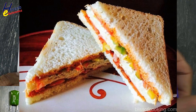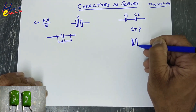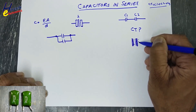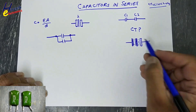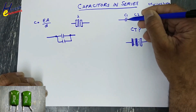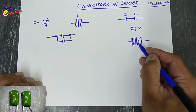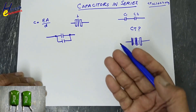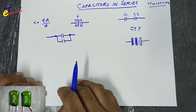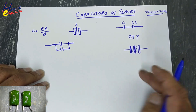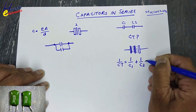In series, we are making a double-decker sandwich — one bread piece, some filling, then another bread piece, then filling, then a third bread piece. We connect one plate here and the second plate here; the central plates are connected together. The plate size is the same, but the distance between the outer plates is doubled — this distance plus this distance — and as a result, the capacitance decreases.